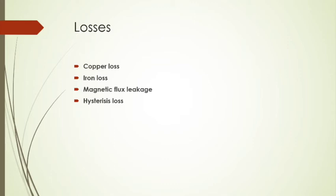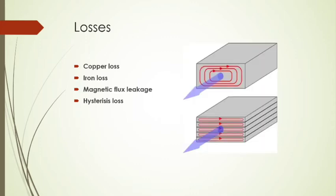The second one is iron loss, which is also called eddy current loss. The lamination of the iron core minimizes this type of loss.